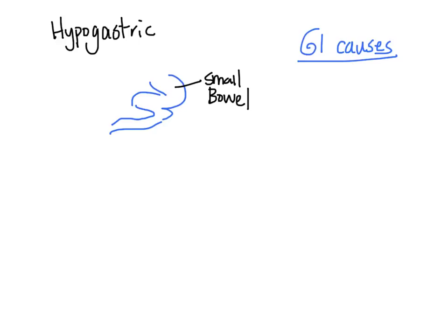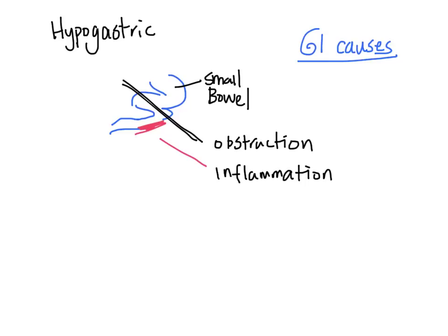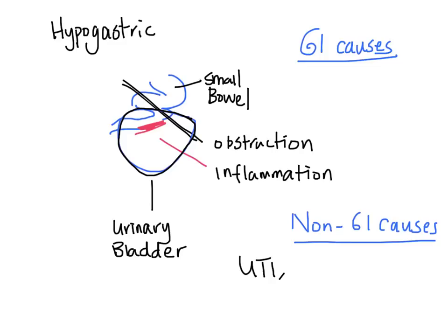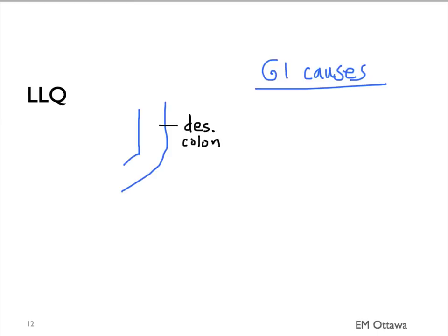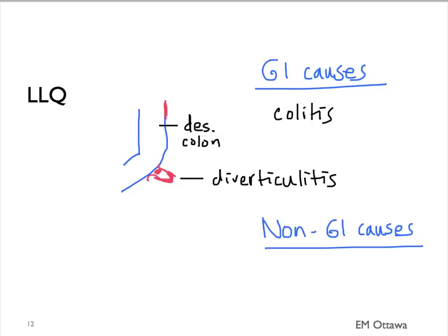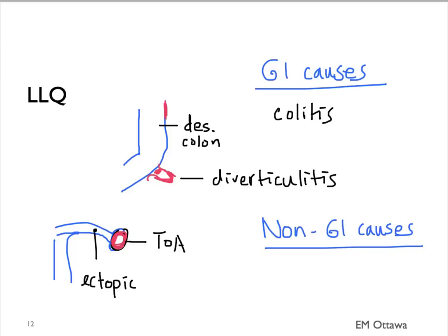What about the hypogastric area? What lives there? The small bowel. Conditions giving pain to that area can include obstruction or inflammation. For non-GI causes, the bladder sits right in this area, so conditions such as cystitis and stones can give pain here. Lastly, the left lower quadrant — what lives there? The descending colon. GI causes can include colitis and diverticulitis. As with the right lower quadrant, in females we need to think about gynecological conditions such as ectopic pregnancy and tubo-ovarian abscess; in males, torsion and infection.